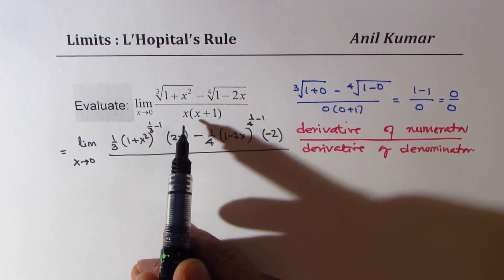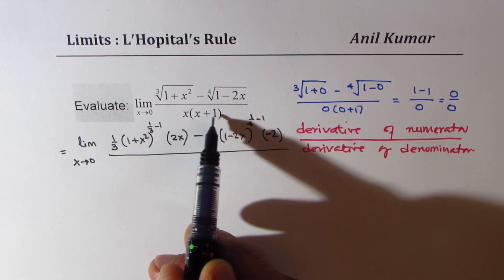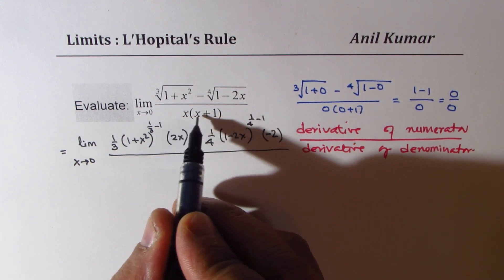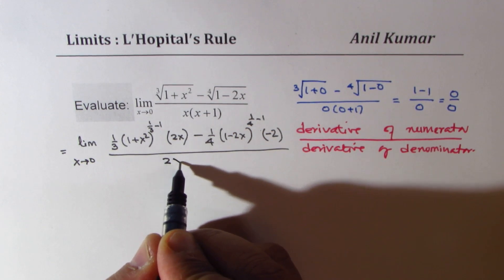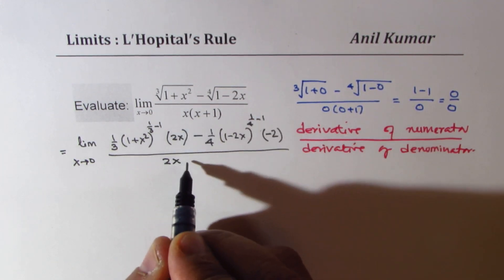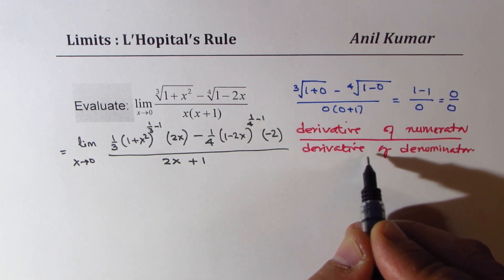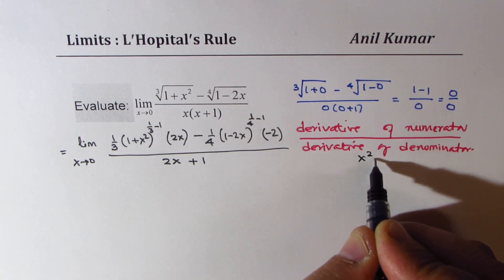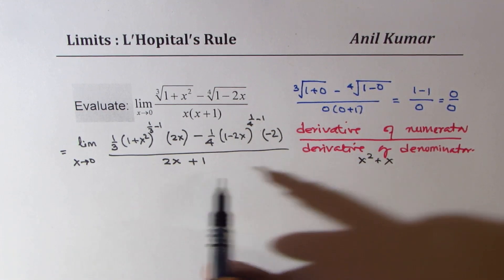So, divided by, now, it is better to write this as x squared plus 1. So, if I write this as x squared plus 1, in that case, derivative is 2x, I mean 1 times x, 2x plus 1. What I've done here is I've written the denominator as x squared plus x, and the derivative is 2x plus 1.